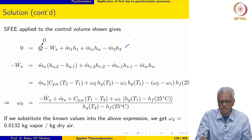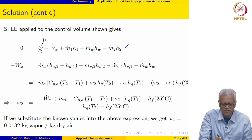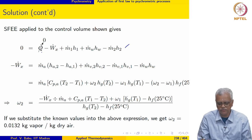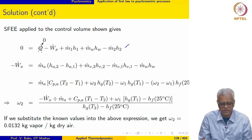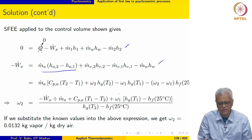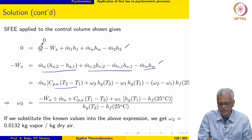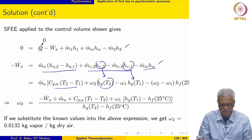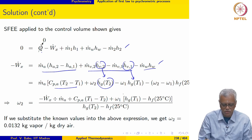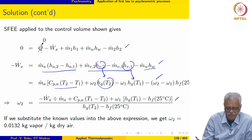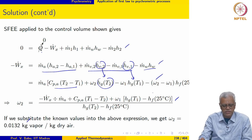The steady-flow energy equation has Q̇ = 0 (insulated) but Ẇₓ ≠ 0 due to the fan. After rearranging and separating enthalpy terms for dry air, water vapor, and liquid water — treating dry air as an ideal gas and approximating Hᵥ as Hg of T — we get an expression with ω₂ as the only unknown. Substituting known values gives ω₂ = 0.0132 kg vapor per kg dry air.